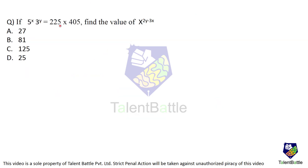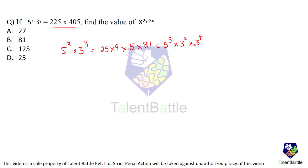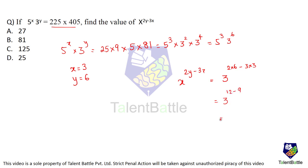If 5^x × 3^y = 225 × 405, find the value of x^(2y) − 3x. Factorizing: 225 = 5² × 3² and 405 = 5 × 3⁴, so 225 × 405 = 5³ × 3⁶. Therefore x = 3 and y = 6. Now x^(2y) − 3x = 3^(2×6) − 3×3 = 3^12 − 9 = 3^12 − 3² = 3^(2) ... actually 3^(12−9) = 3³ = 27. The answer is option A, which is 27.